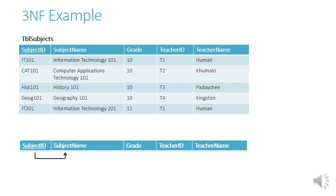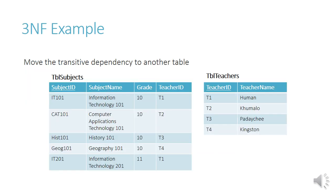Here's the dependency diagram. To put it into third normal form, we move the transitive dependency fields to another table. Table subjects retains subject ID, subject name, grade, and teacher ID. Teacher name is removed into a second table called table teachers, which contains teacher ID and teacher name. There are now no more transitive dependencies — in table teachers, teacher name is fully dependent on teacher ID, which is the primary key.